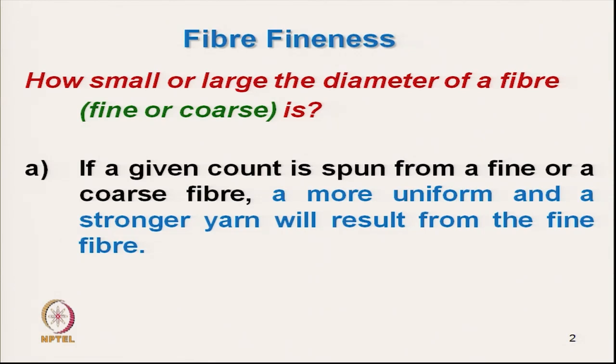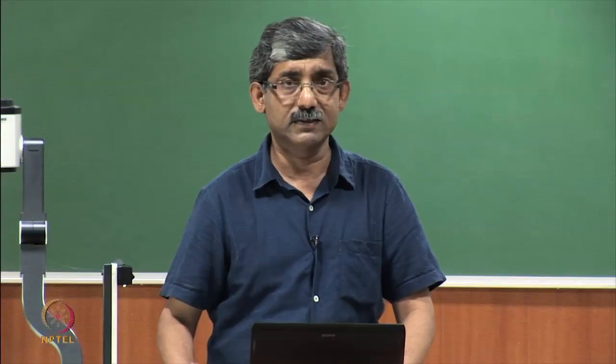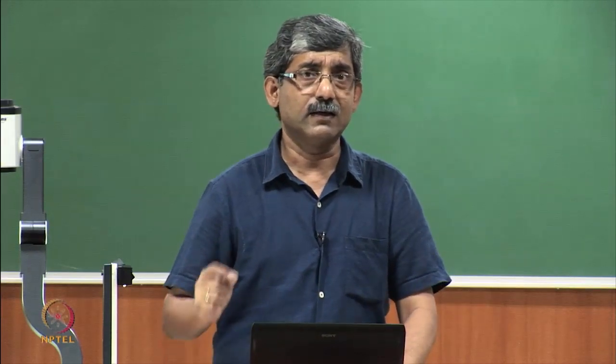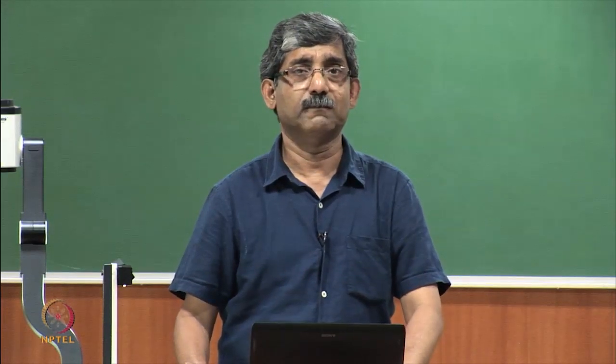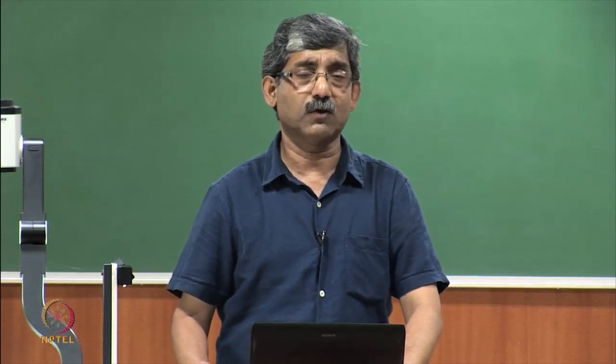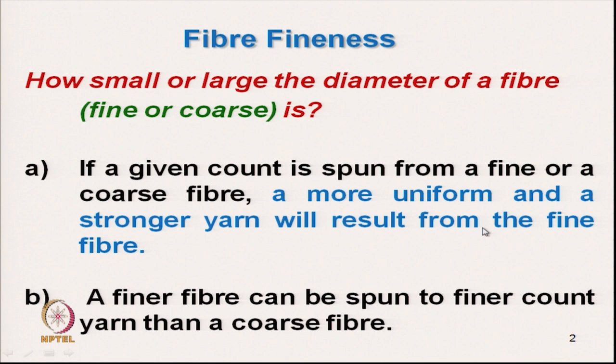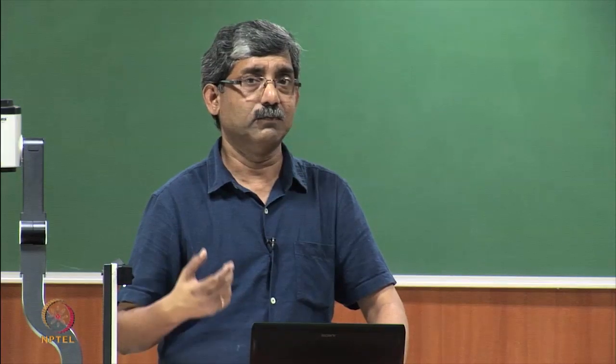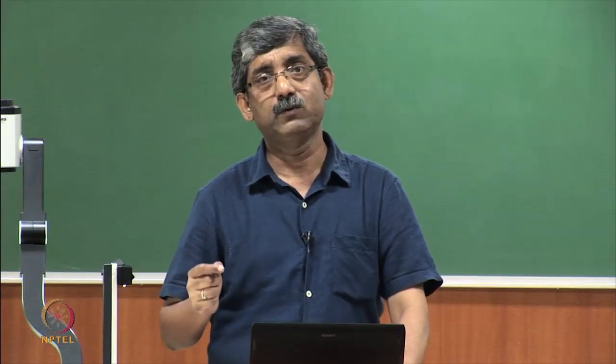We get higher uniformity and a stronger yarn from finer fibre. For the same yarn linear density, if we use finer fibre, the number of fibres in the cross-section will be higher. A higher number of fibres results in higher uniformity, and more fibres mean more contact points — higher contact area — which results in stronger yarn for the same fibre tenacity.